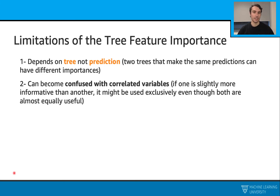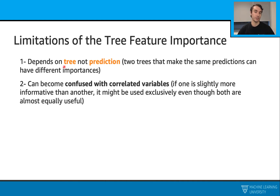Now we've learned how to calculate feature importances. This time, let's talk about some limitations. The first limitation is about our trees. These feature importances depend on our trees, so even if you have two trees that make exactly the same predictions on your data points, you may still have different feature importances because they are calculated depending on the structure of these trees.